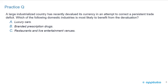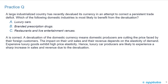Practice question two: A large industrialized country has recently devalued its currency in an attempt to correct a persistent trade deficit. Which of the following domestic industries is most likely to benefit from the devaluation? A, luxury cars; B, branded prescription drugs; or C, restaurants and live entertainment venues. The correct answer is A.